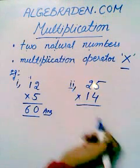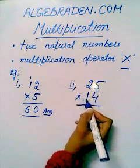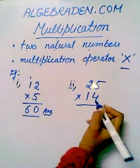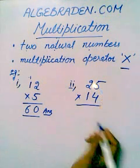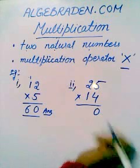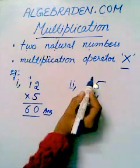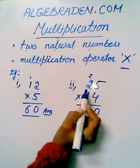In another example, 25 multiplied by 14. Start from 4 multiplied by 5. It gives us 20. Write 0 here and carry 2 to the next digit.